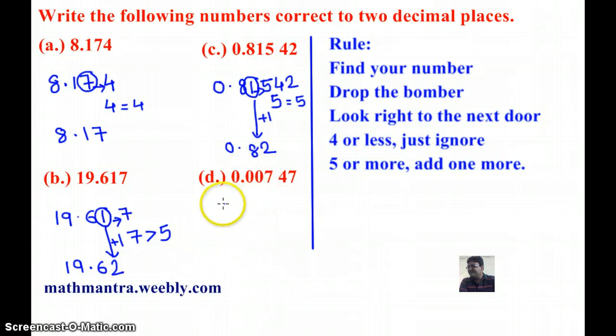And, the last question here is 0.00747. Okay, so the 0 is my number and the next door number is 7 which is, of course, greater than 5.